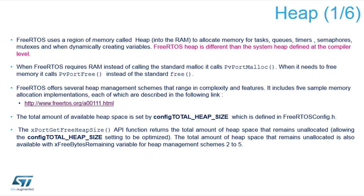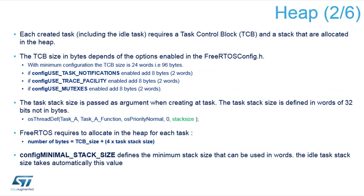You need to specify total heap size in the FreeRTOS config header file. If you are not sure there is enough space for the heap you can call xPortGetFreeHeapSize, which returns the value of the unallocated heap space. Each task, queue, or other resource needs a control block allocated in the heap. You can enable task notifications, trace facility, and mutexes in the heap — usually predefined in CubeMX — but if you change it in the configuration file directly, that change will not be propagated when you regenerate the project.